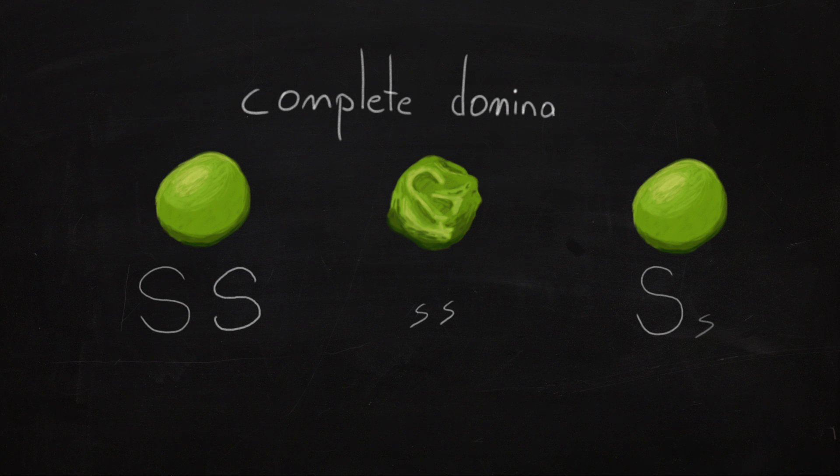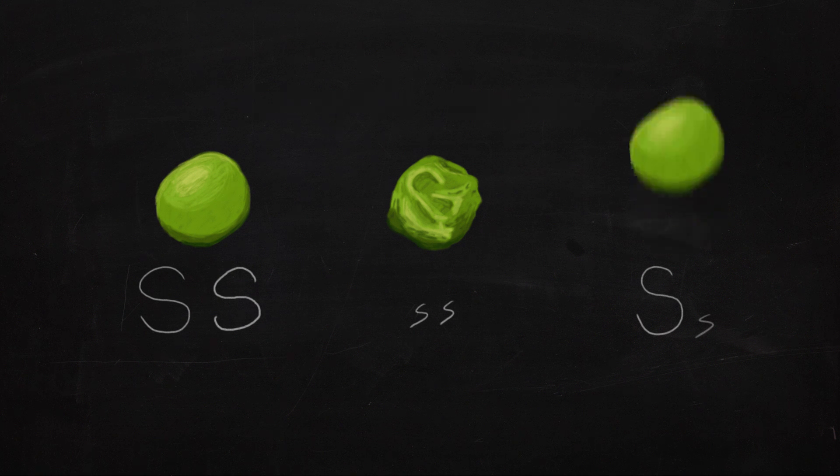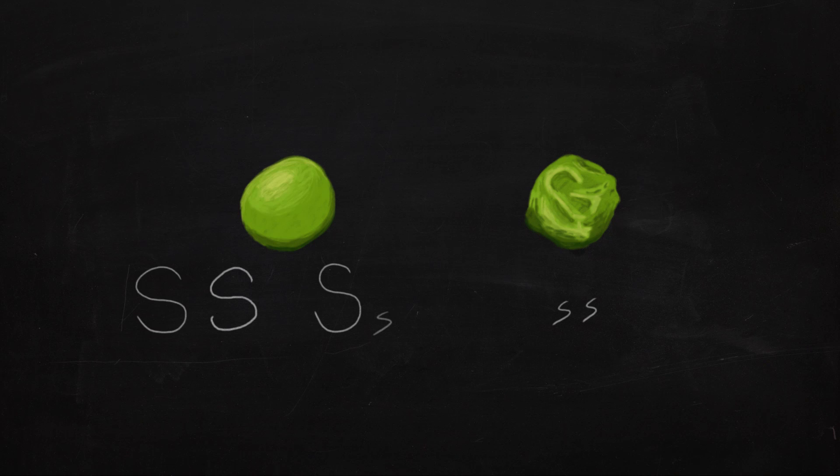This is called complete dominance, where the phenotype of the mixed allele individual is indistinguishable from the two dominant allele individual. It's as though the phenotypic effects of the little s are being ignored or deleted. It's not that the dominant allele is always better or always worse. This is just one of the ways the genes influence the trait.